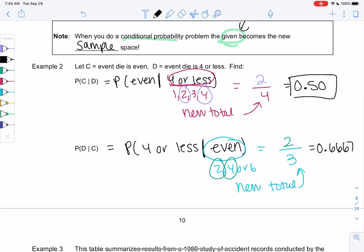And this will give us 0.6667. So again, find the new total before you start just immediately writing numbers down.